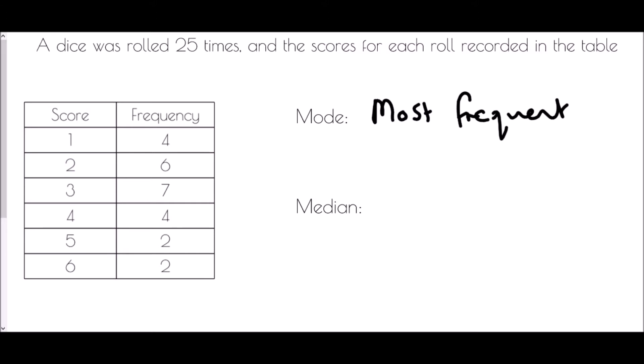A lot of people make a mistake: they look down the table and say there's a two here and here and here, or a four and a four and a four — those are the most common values. But that's not what we're talking about. We're looking down the frequency column for the highest value, which is seven. But the mode is not seven — the mode is the score associated with it, which is three. Three happened more often than any other score.